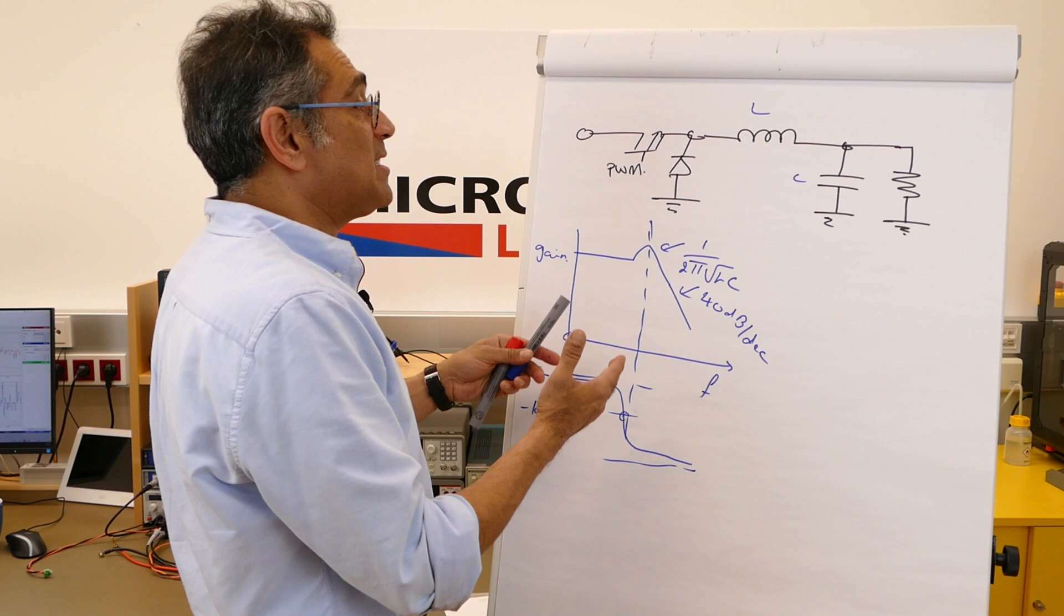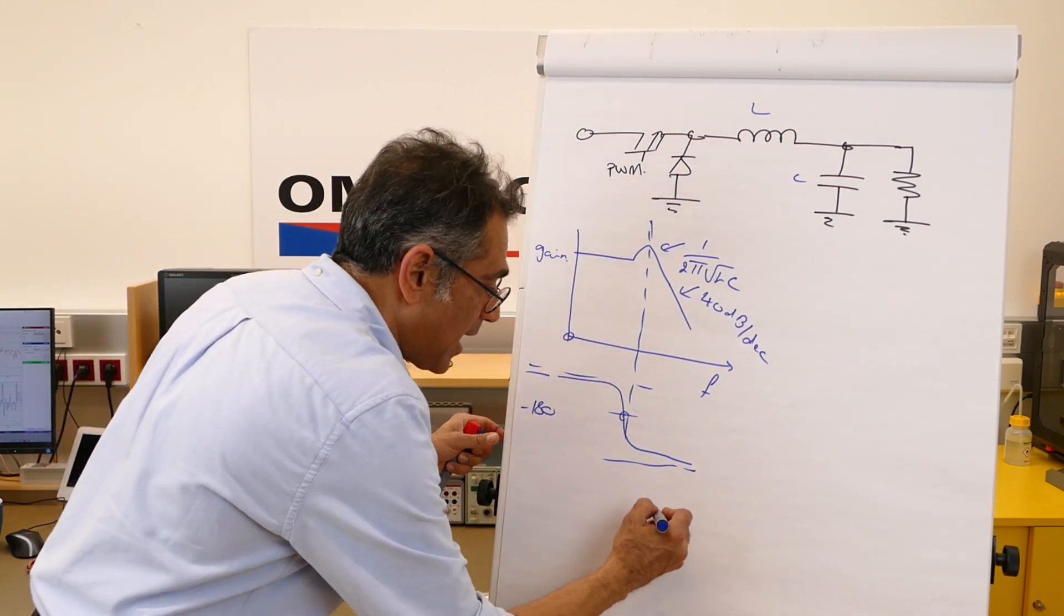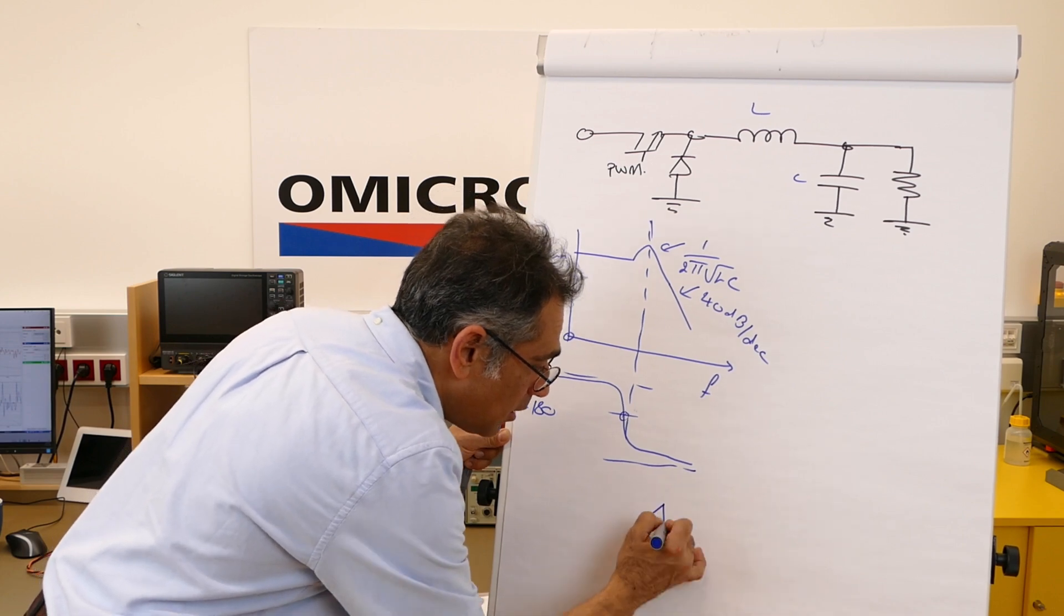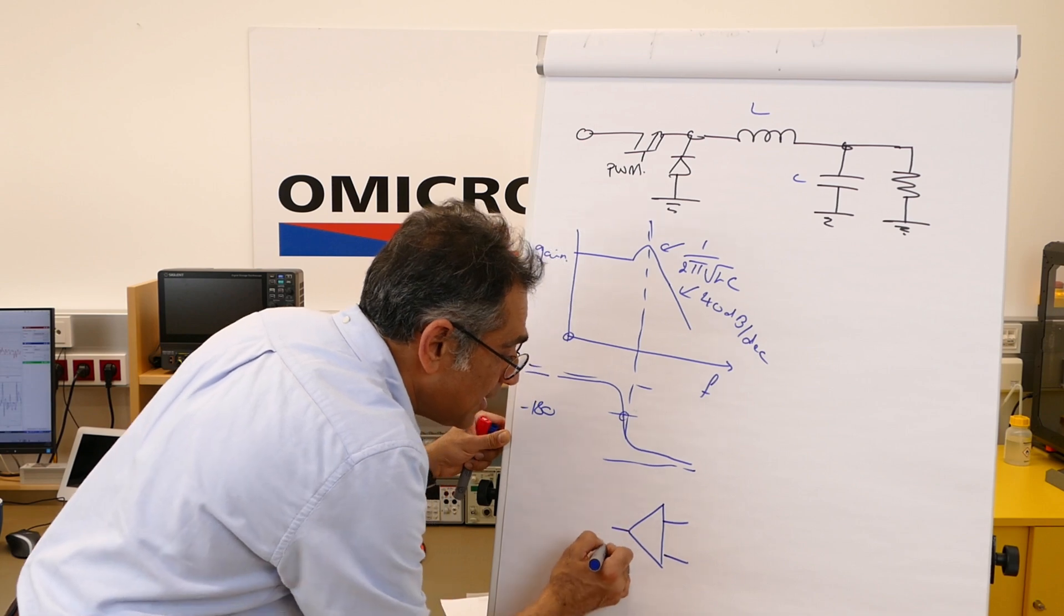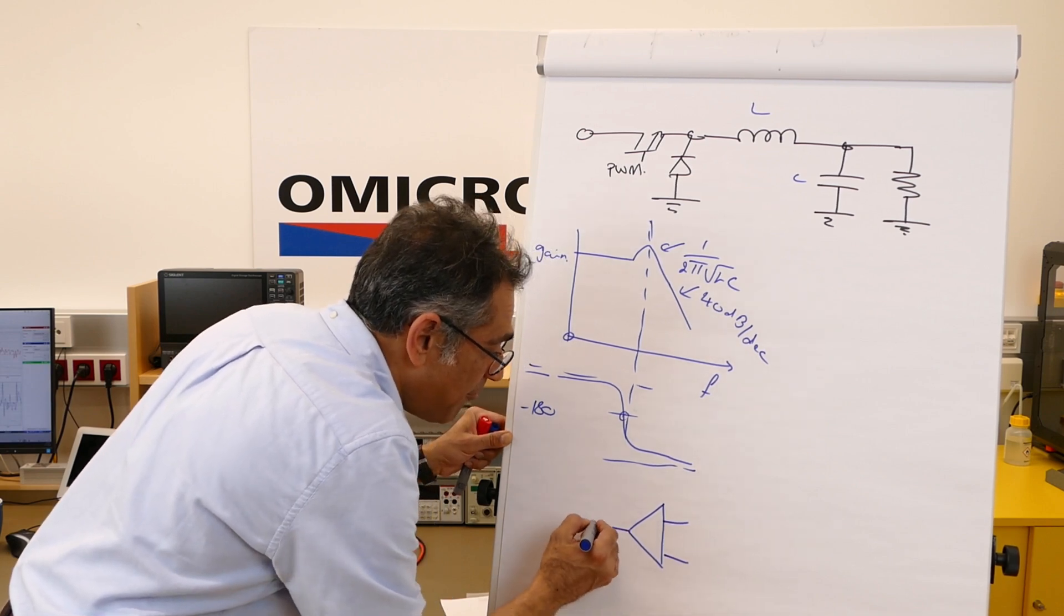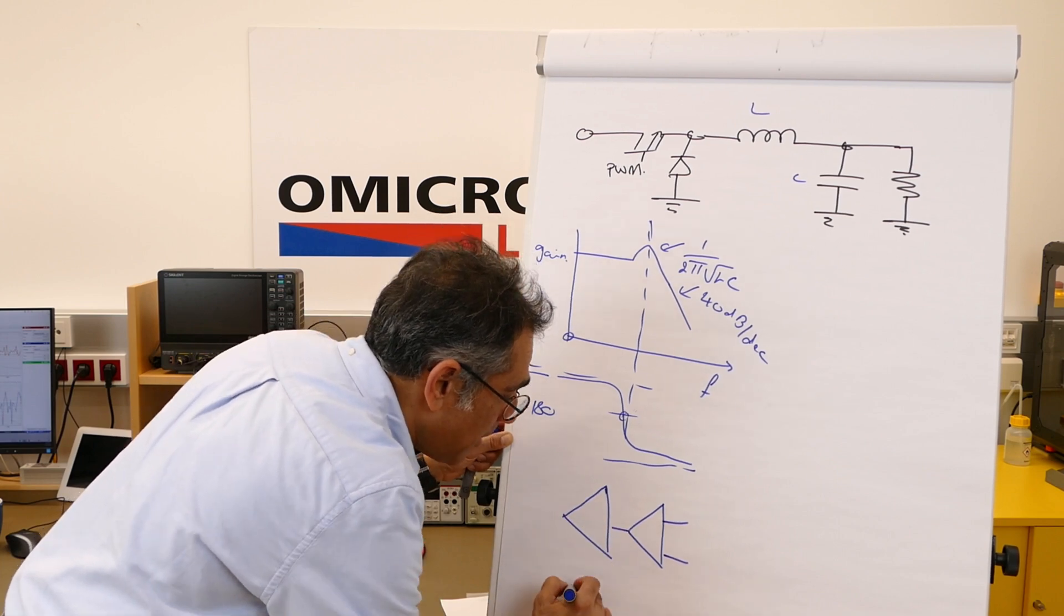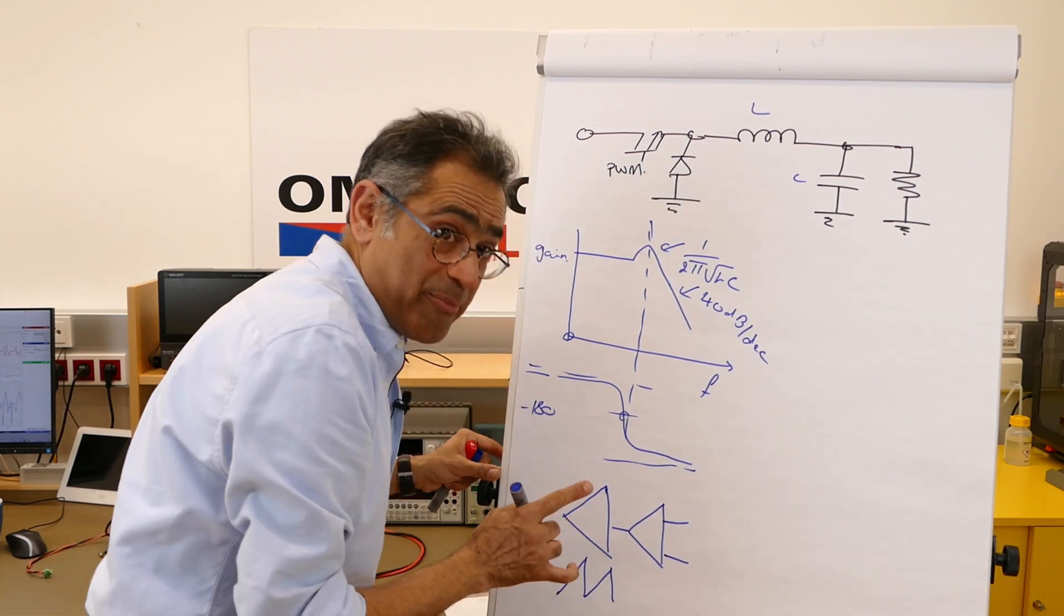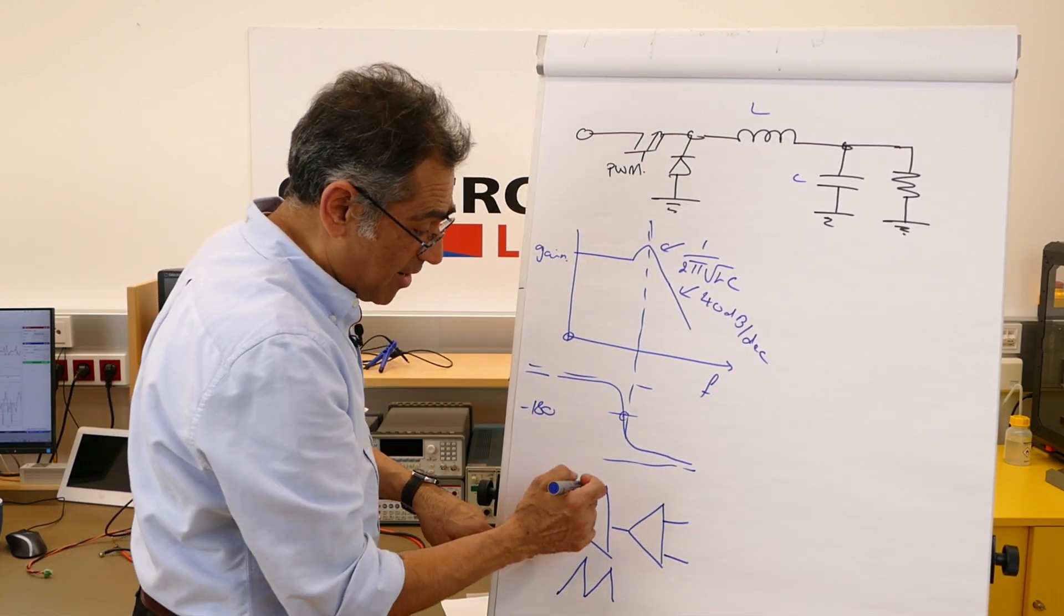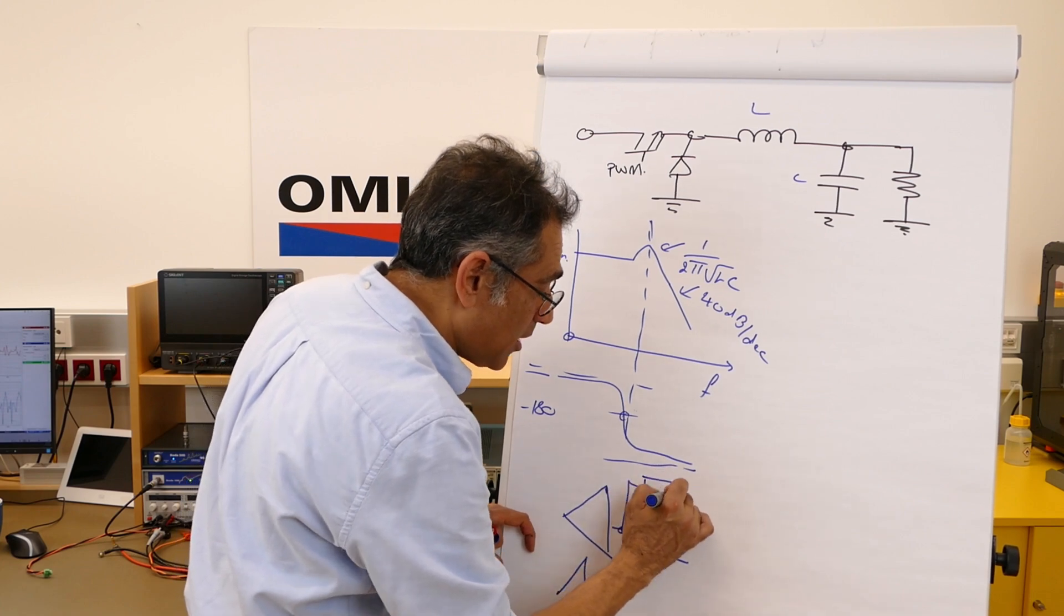The way we create a PWM for this is like so. I have an error amplifier which is my compensator. That gives me a reference which I compare to a fixed ramp, and that is important. It's a fixed ramp that is going to my comparator. So this is my compensator.